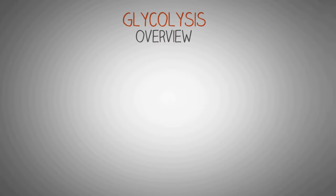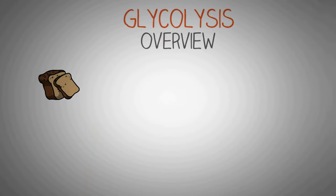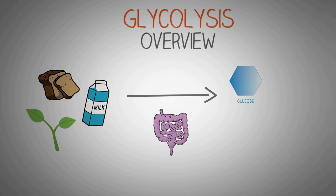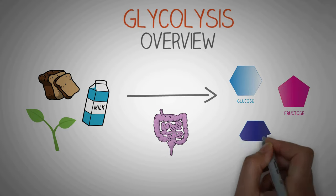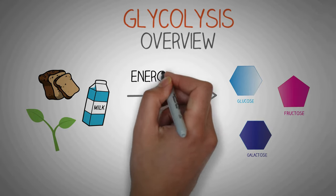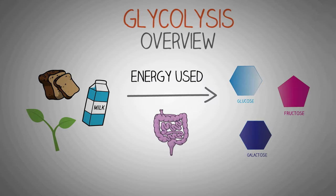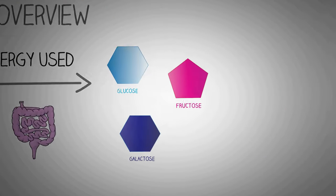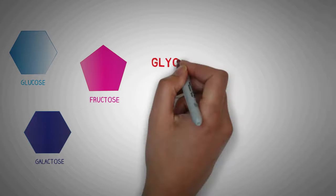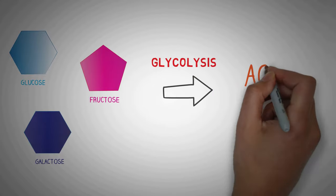Let's first start with an overview about the process of glycolysis. At the end of digestion of carbohydrates we get simple monosaccharides like glucose, fructose and galactose. Please note that at this point we have not extracted any energy from these sugars — in fact we use energy to digest and absorb them. These sugars then undergo glycolysis which produces acetyl-CoA, and a small amount of energy is also produced at this step.